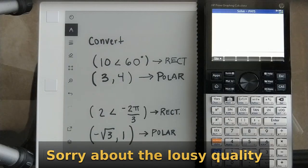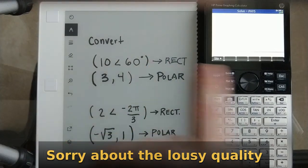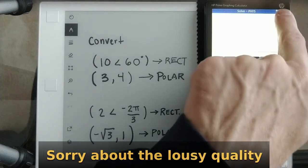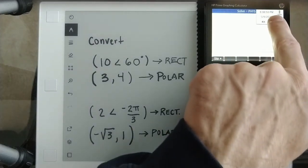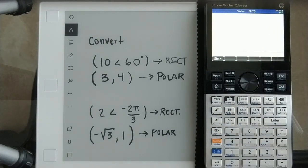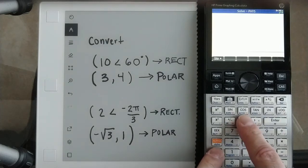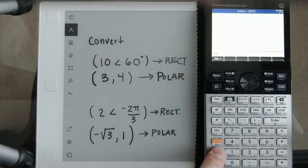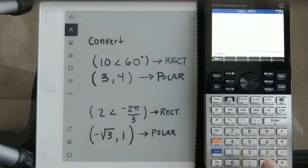All right, let's look at converting these on the prime. Since I'm in degrees here, and this calculator is currently in radians, I touch the upper corner here and switch it to degrees. If we want to convert this, we just put our parentheses, 10, we use the shift and this angle symbol, 60, it knows we're talking degrees, enter.